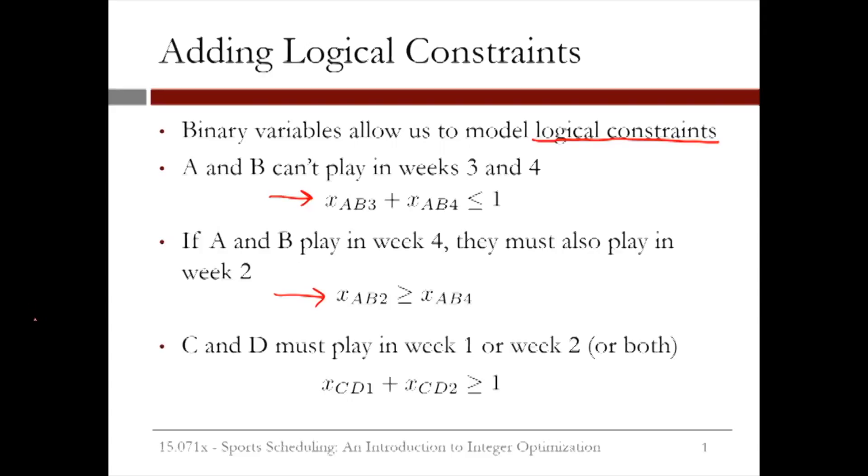Lastly, suppose that teams C and D must play in week 1 or 2. They can't play both games in weeks 3 and 4. We can model this constraint with xCD1 plus xCD2 greater than or equal to 1. Feasible solutions are both variables equal to 1 or 1 variable equal to 1. Both variables can't equal 0. These are just a few examples of logical constraints that we can implement using binary variables. Let's go into LibreOffice now and add these constraints to our model.